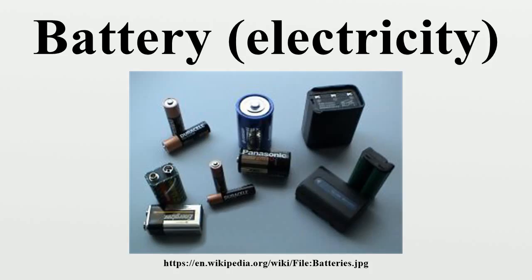Other primary wet cells are the Leclanché cell, Grove cell, Bunsen cell, Chromic acid cell, Clark cell, and Western cell. The Leclanché cell chemistry was adapted to the first dry cells. Wet cells are still used in automobile batteries and in industry for standby power for switchgear, telecommunication, or large uninterruptible power supplies.